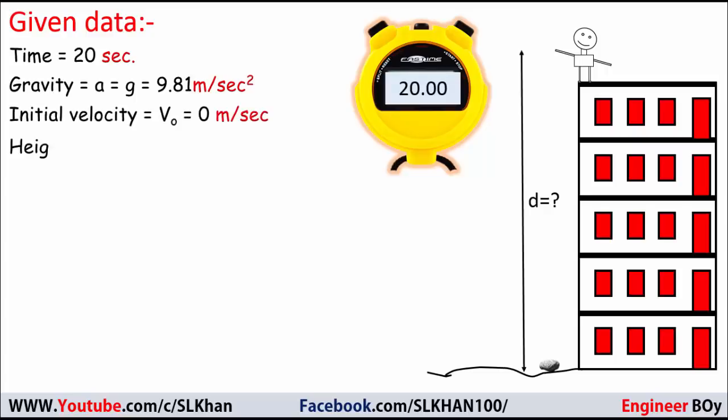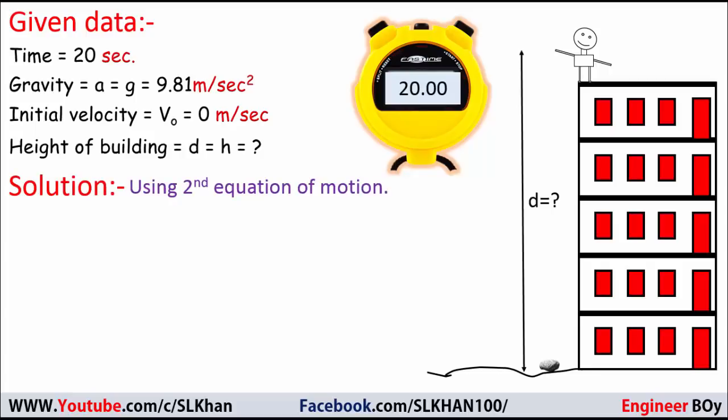Using the same data we can determine the building's height by using motion equation. So recall the physics of ninth grade and guess which motion equation is most suitable for the given data. Of course it must be the second equation of motion.